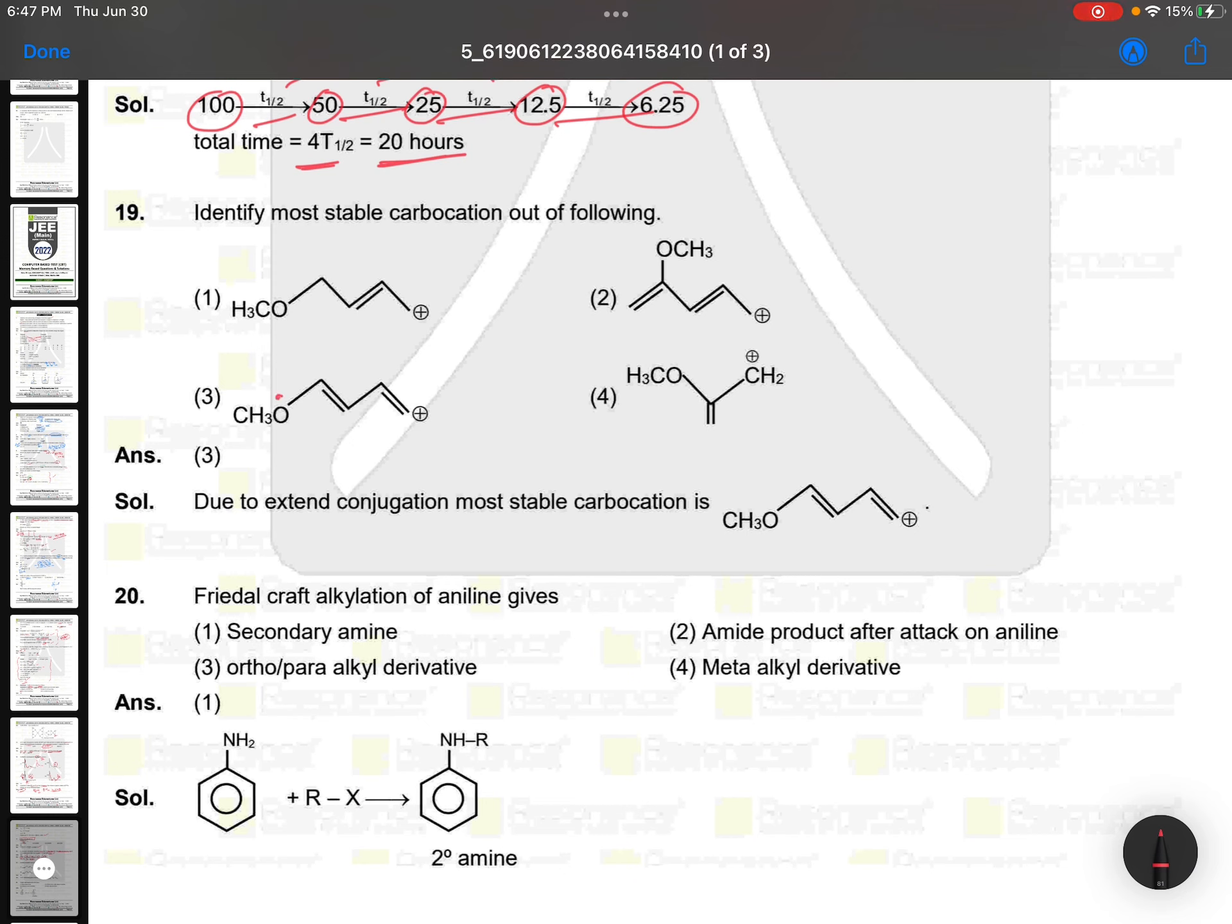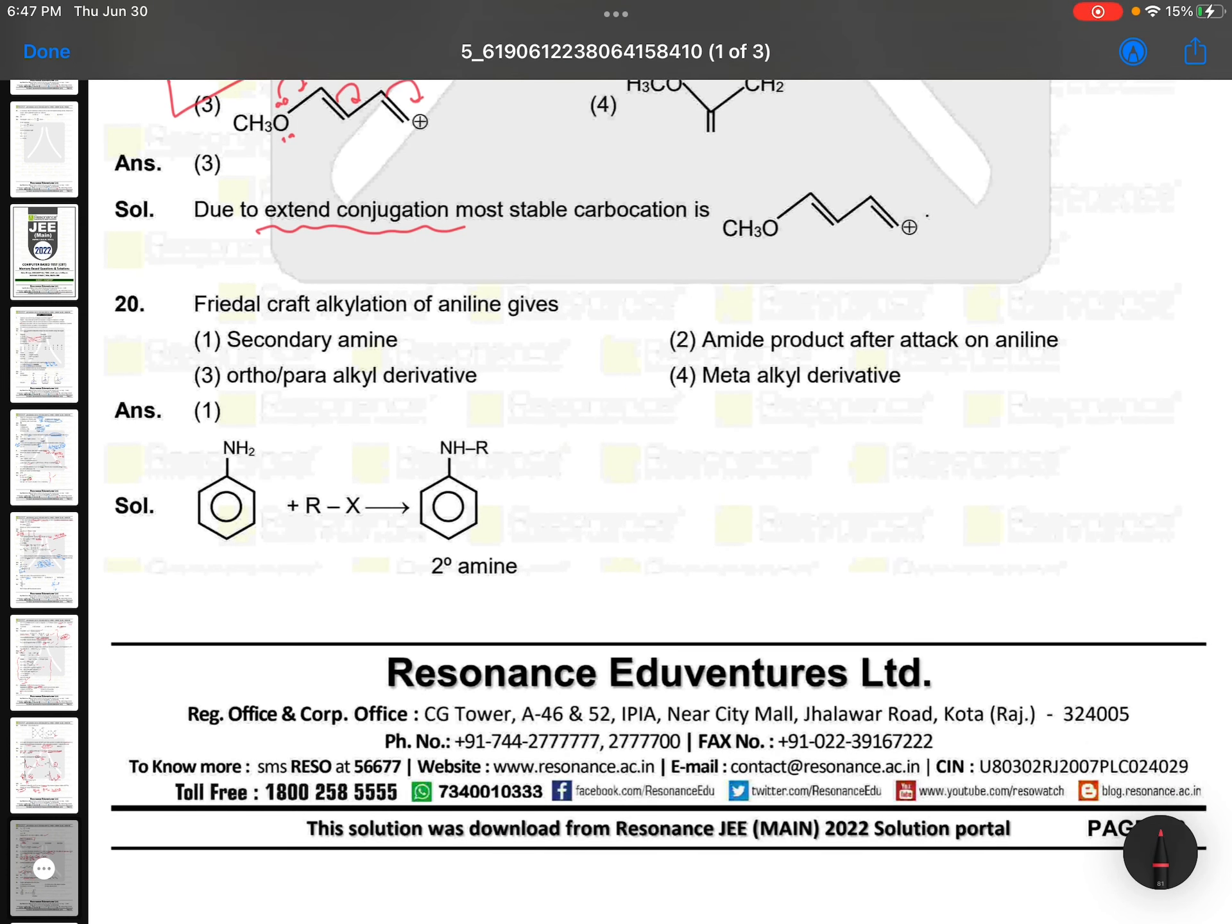Most stable carbocation of the following: you can see here oxygen is having lone pair. This is having extra conjugation, extended conjugation. Because of extended conjugation, this is most stable. Friedel-Craft alkylation of aniline: aniline you can't get on benzene ring Friedel-Craft alkylation. This is not possible because aniline is a base and you are going to use in alkylation acid. So here Friedel-Craft alkylation reaction is not possible on benzene ring. Instead of that, you will be getting the secondary amine. A good question.